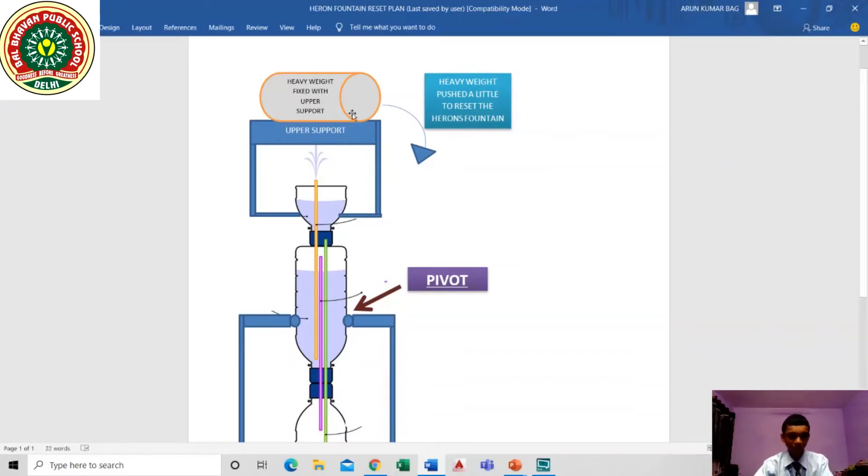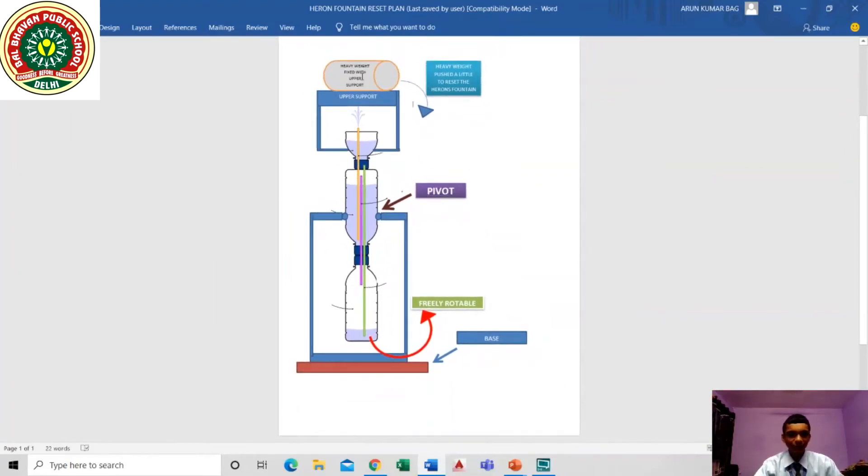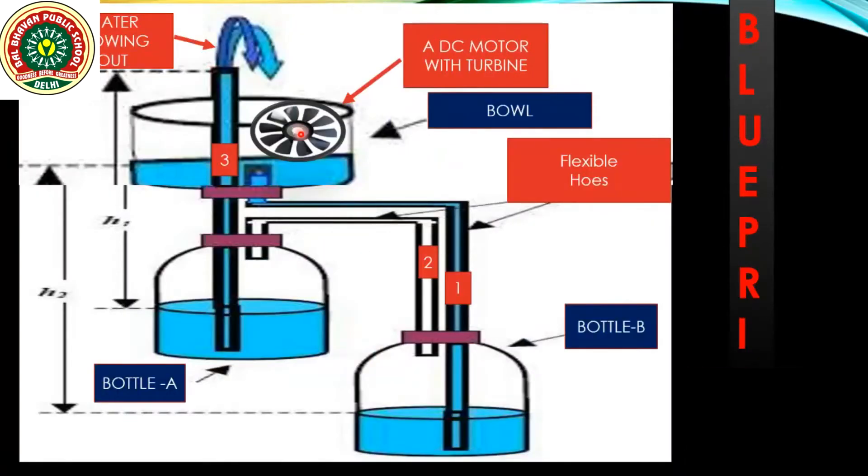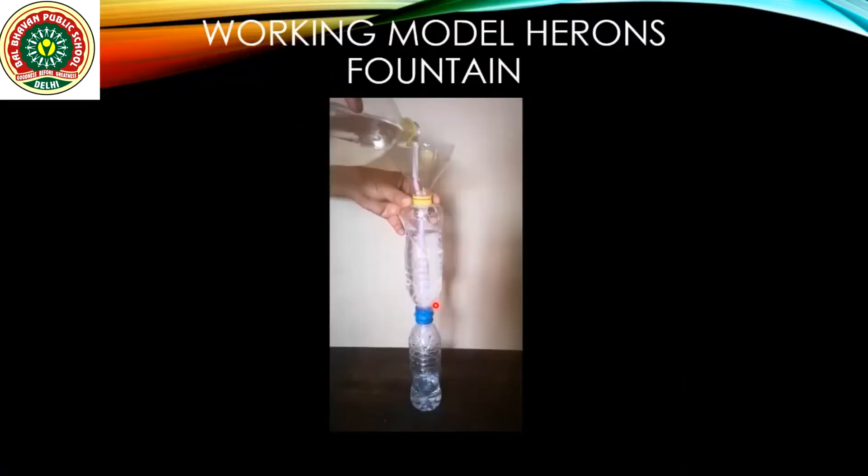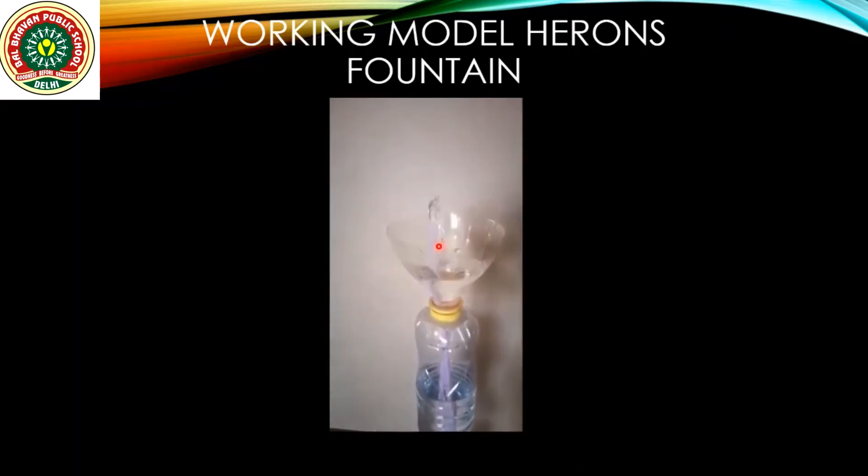If we use the heavy weight to rotate it twice, it will get reset and you can continue generating the electricity. I have made this working model of it. You can take a look at this. You can see the fountain coming out endlessly without any energy, only using gravity and air pressure.